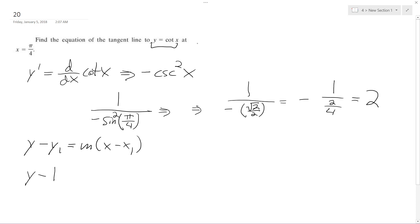So I had to figure that out first. And then this is 2, and then x minus, and then originally we just had pi over 4. So solve this: y minus 1 is equal to 2x minus 2 times pi over 4, which equals pi over 2.